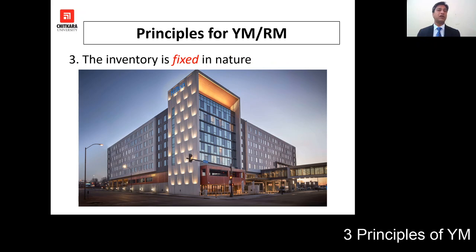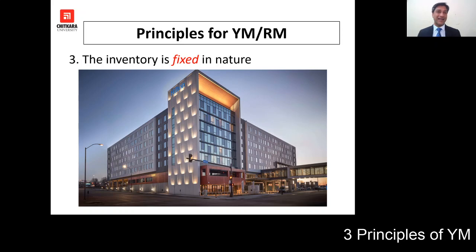Principle number three talks about the inventory being fixed in nature. The inventory refers to the number of rooms available for sale. For example, if a hotel has 100 rooms and 90 are occupied, the manager cannot remove 10 rooms and show 100% occupancy. Likewise, if there are 100 rooms but 110 reservations have been made, the manager cannot add 10 rooms to accommodate those guests. The number of rooms available for sale cannot be changed — this is the fixed inventory principle.